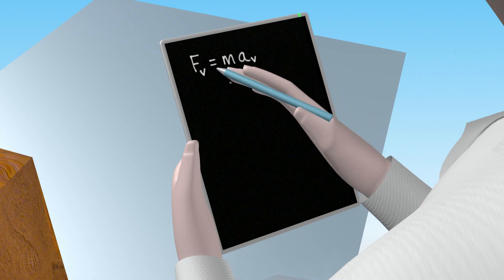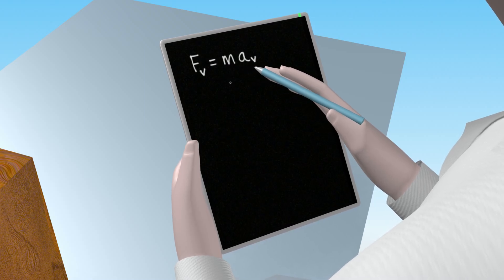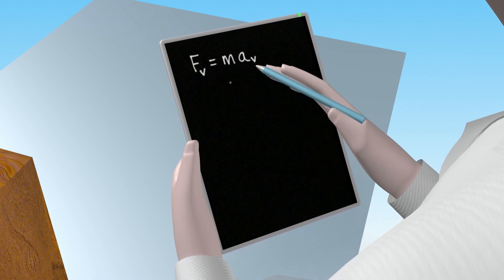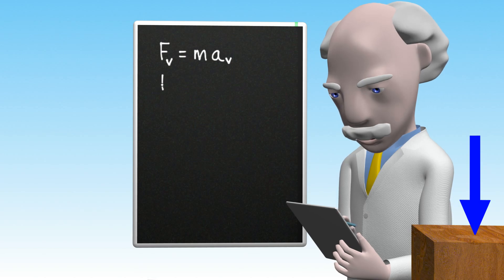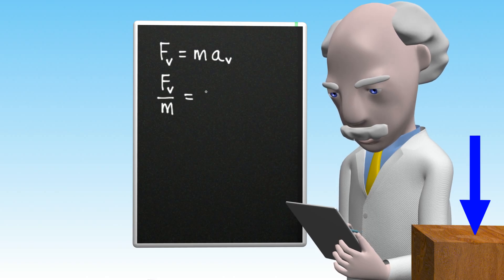That is F equals MA with the subscript v used to indicate that we are considering the forces and acceleration in the vertical direction. We then rearrange the equation to give the sum of the forces in the vertical direction divided by the mass of the block equals the vertical acceleration.